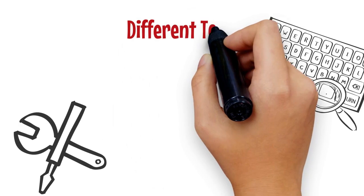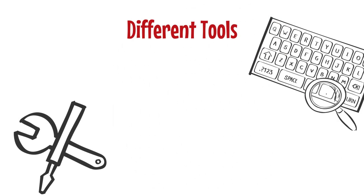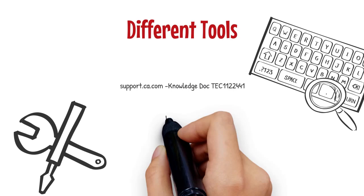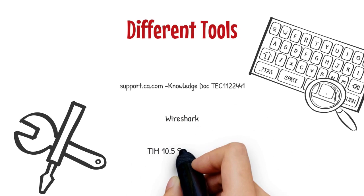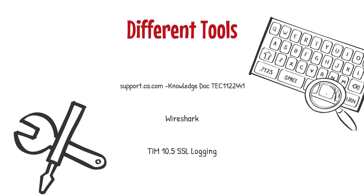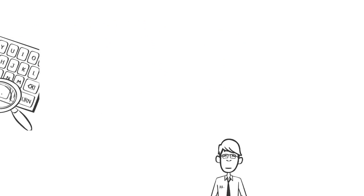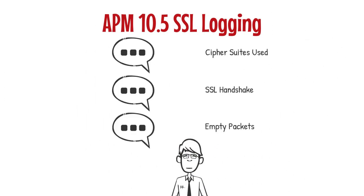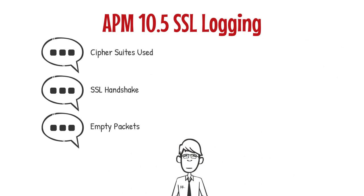There are different tools that can be used to help debug SSL TLS codes. These include knowledge-based articles at support.ca.com — for example, Knowledge Doc TEC1122441 — as well as Wireshark. As of APM 10.5, there is also available SSL logging. APM SSL logging is valuable in providing cipher suites used, SSL handshake details, or empty packets.